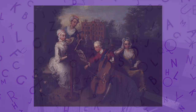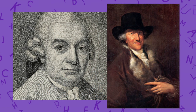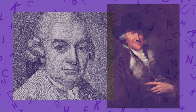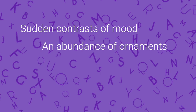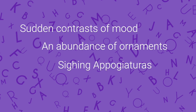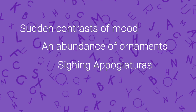In the 18th century, the sensitive style was designed to express true and natural feelings. J.S. Bach's two sons, C.P.E. and W.F. Bach, are remembered as leaders of this style, and their music is characterised by sudden contrasts of mood, an abundance of precise ornaments, use of sighing appoggiaturas, and melodic and harmonic chromaticism.